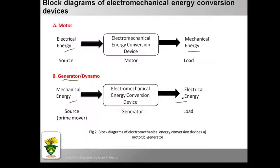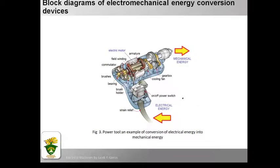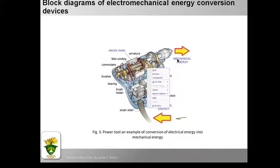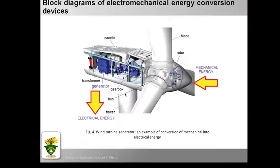An example of a motor is a fan. This shows the conversion of electrical energy into mechanical energy — we have an electrical source of energy that produces rotating mechanical energy. For the generator or dynamo, an example is a wind turbine generator, which converts mechanical energy from the wind into motion, and from that motion it generates electrical energy using this device.